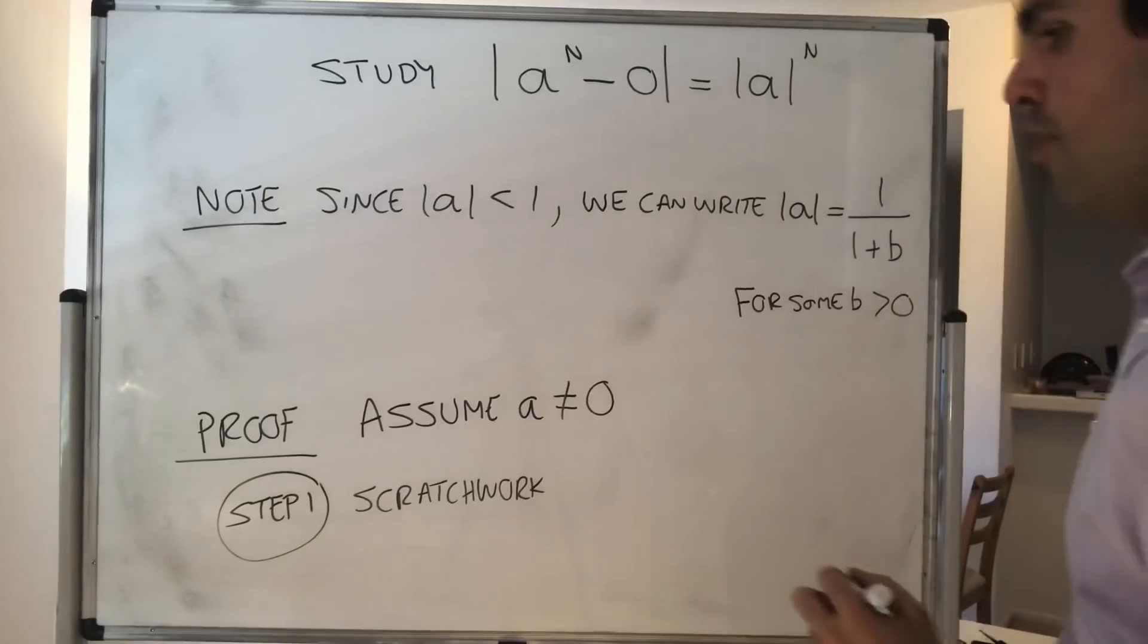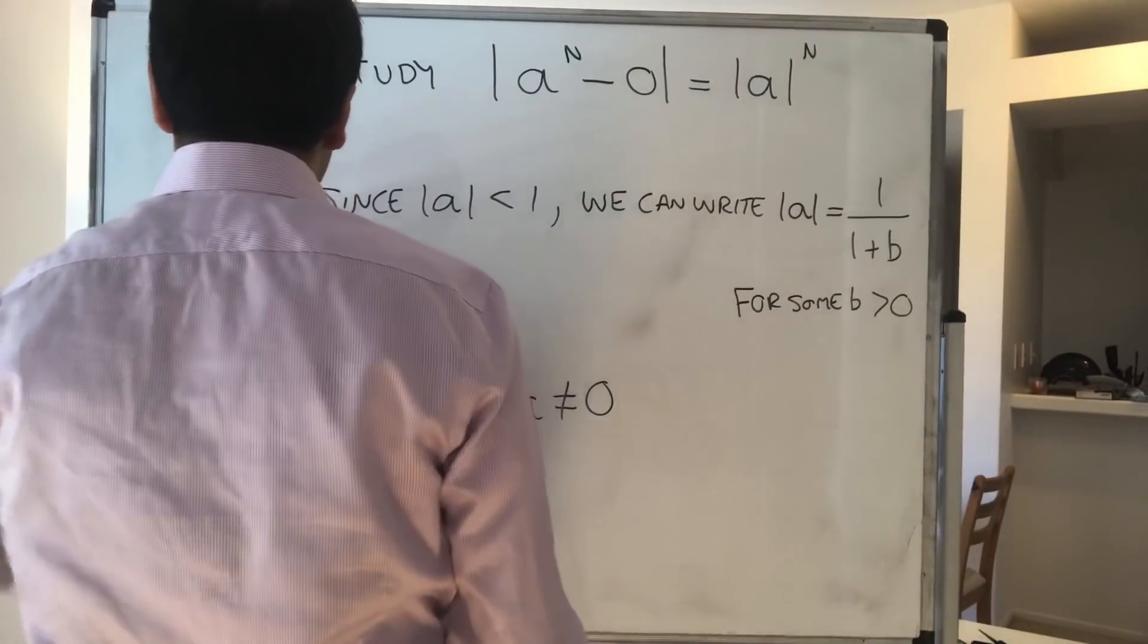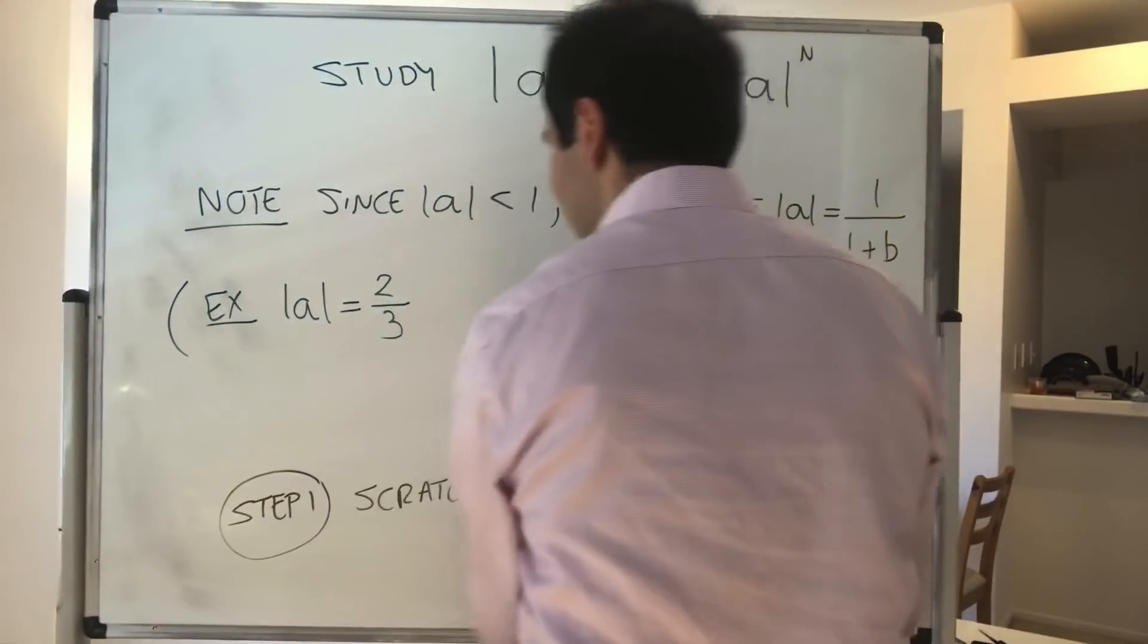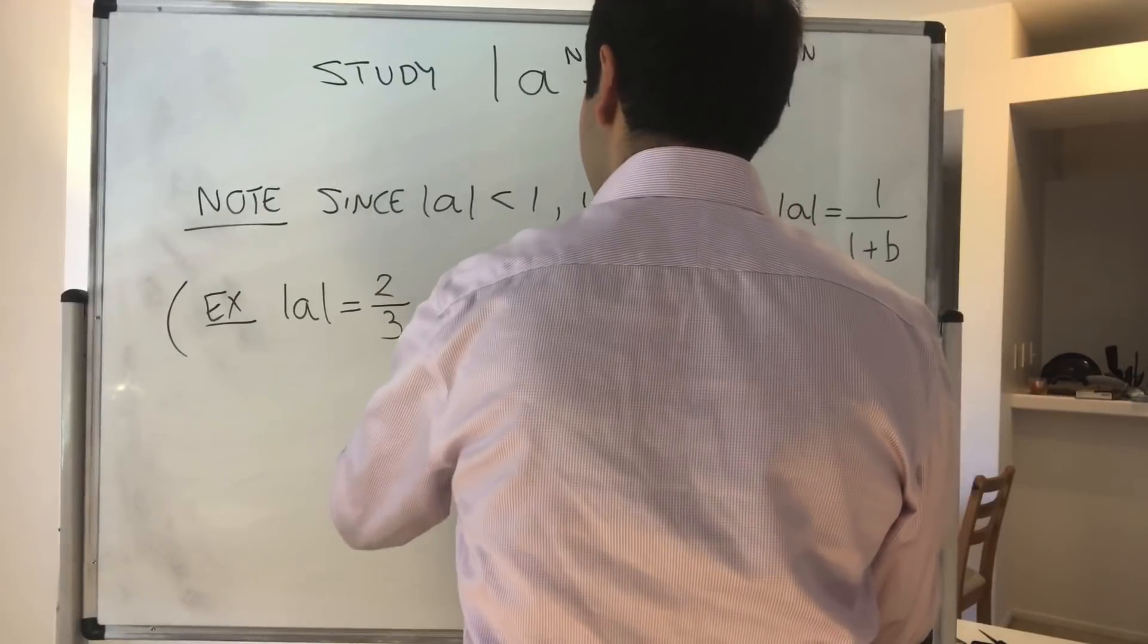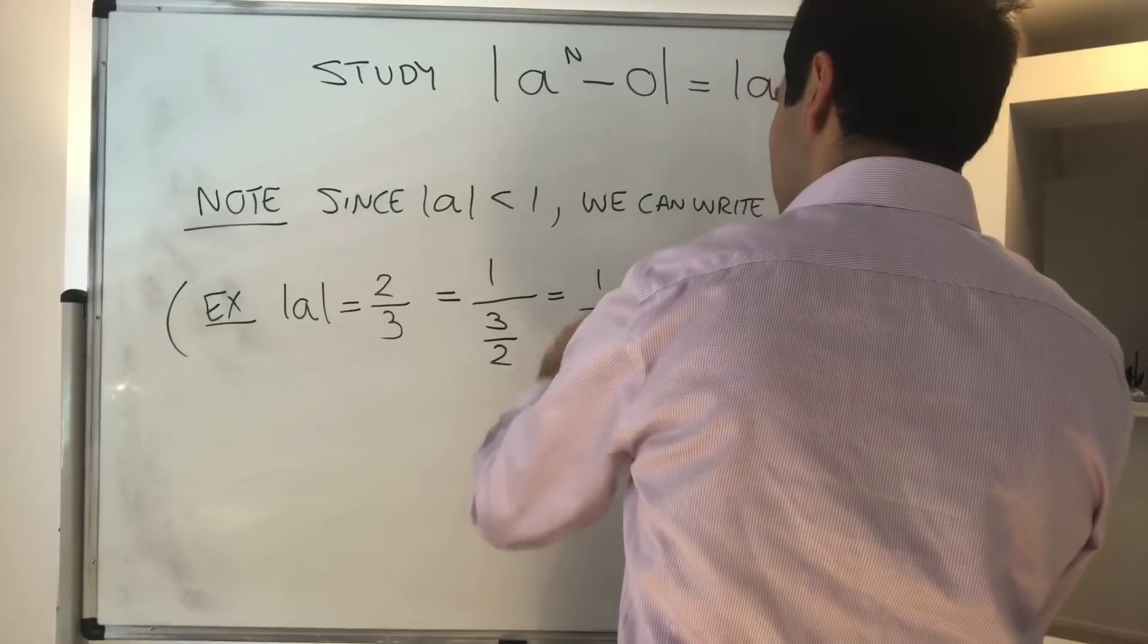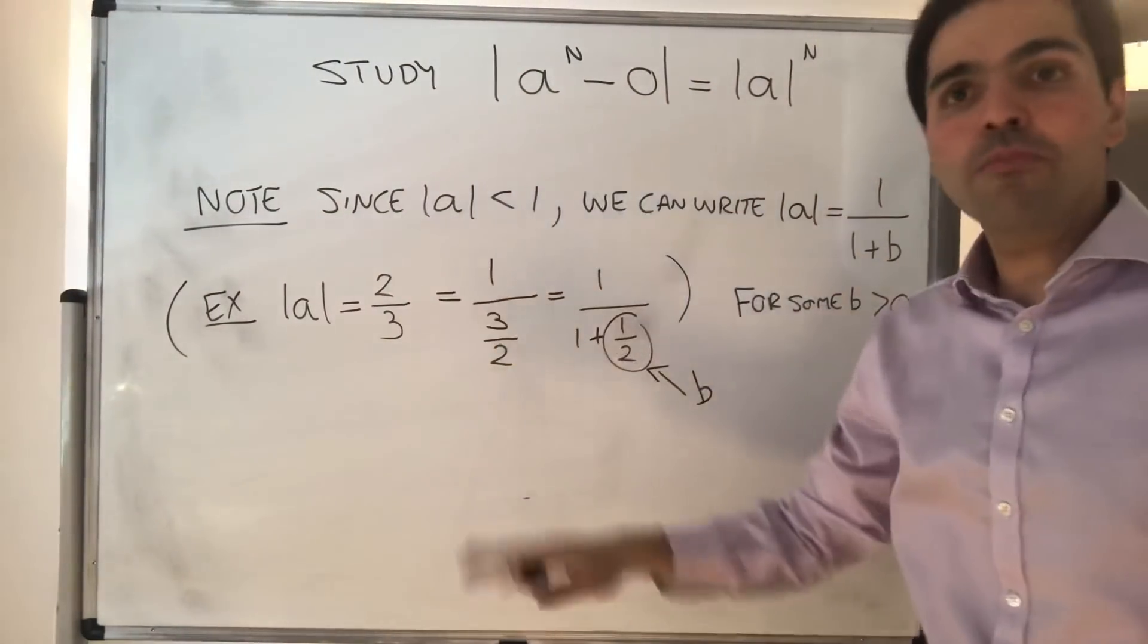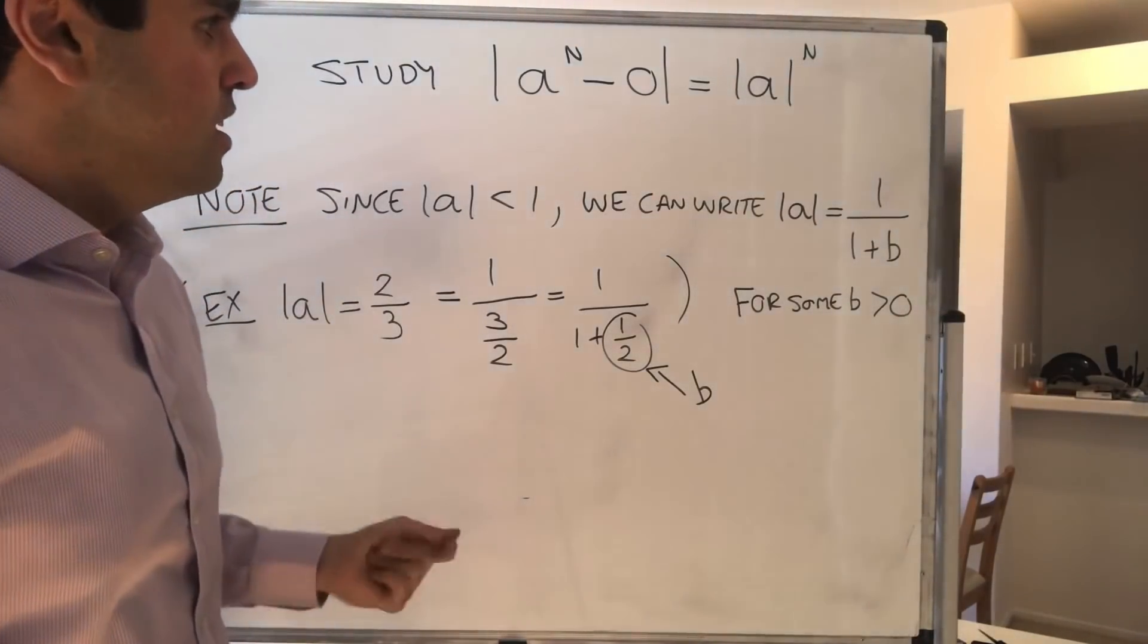You can explicitly solve for b if you want, but let me just give you an example. Suppose absolute value of a is 2 thirds. Well, then you can write this as one over three halves, and that becomes one over one plus one half. So in that case, b is one half. The point is for every number less than one, you can always do that.